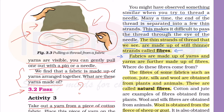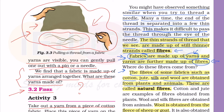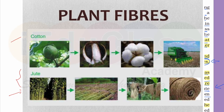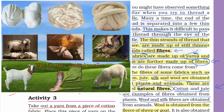The thin strands of thread that we see are made up of still thinner threads called fibers. जो पतले-पतले धागे होते हैं उसको fibers कहते हैं। Fabrics are made up of yarns and yarns are further made up of fibers. कपड़ा बना होता है yarn से और ये धागे बने होते हैं fibers से। The fibers of some fabrics such as cotton, jute, silk and wool are obtained from plants and animals - these are called natural fibers. Cotton and jute are examples of fibers obtained from plants.